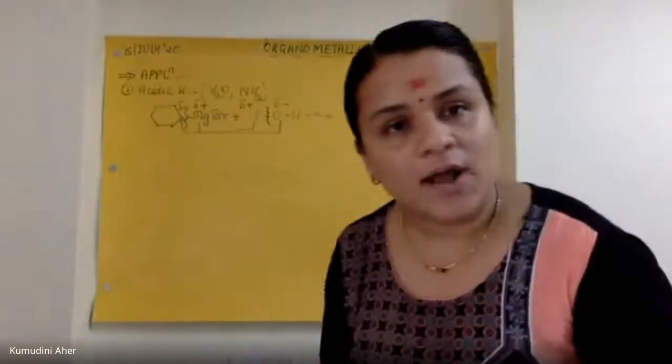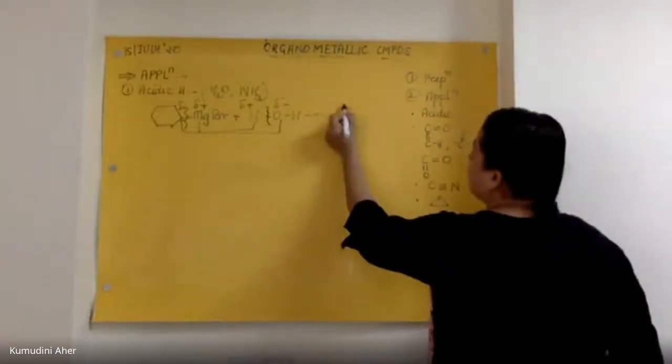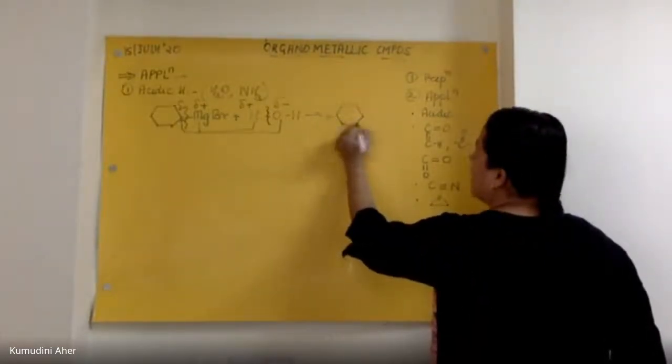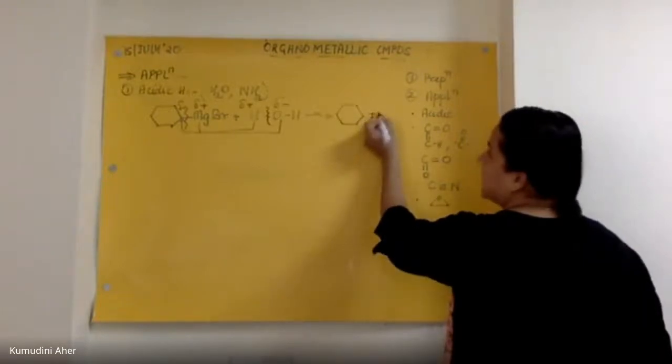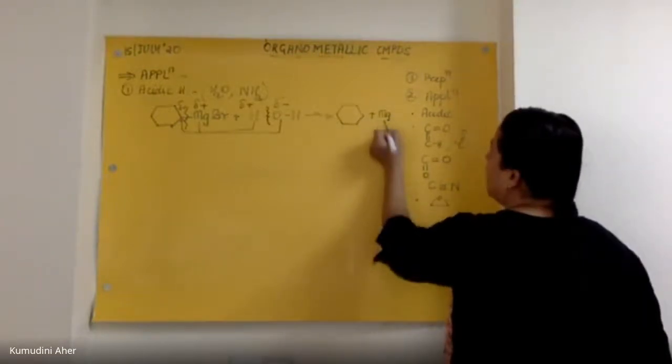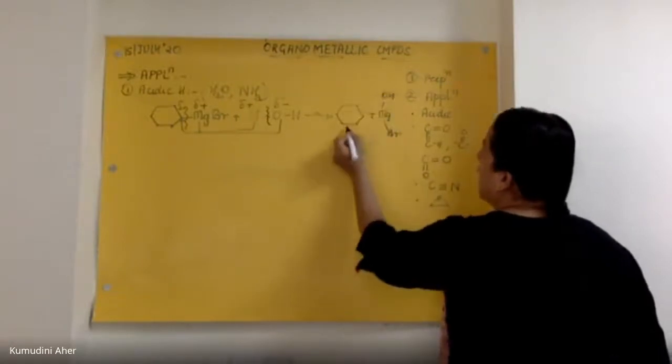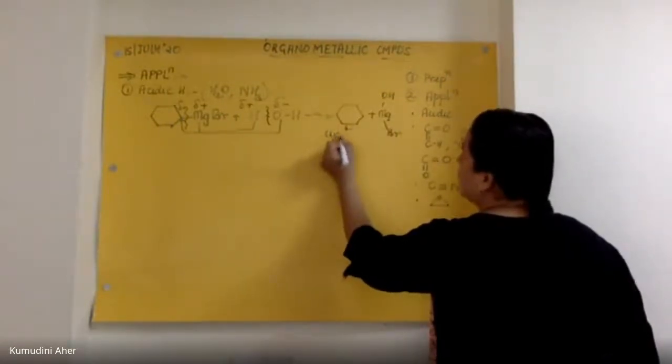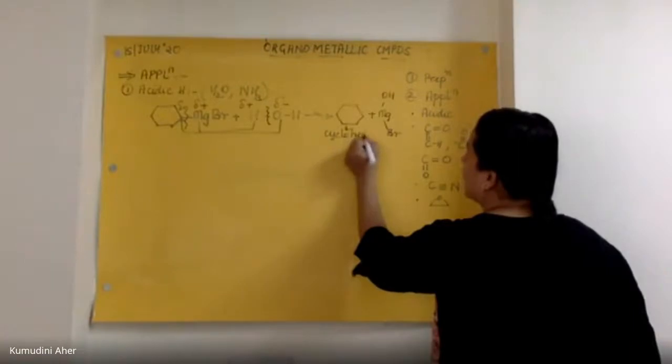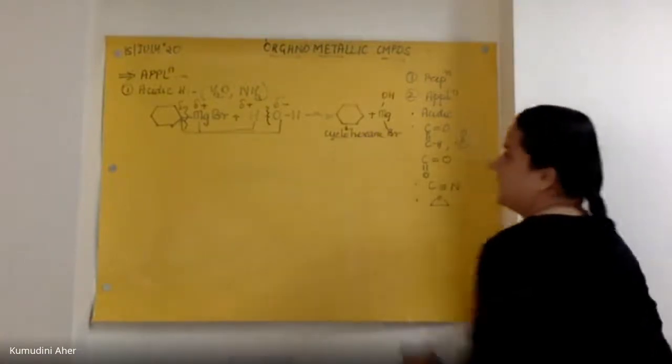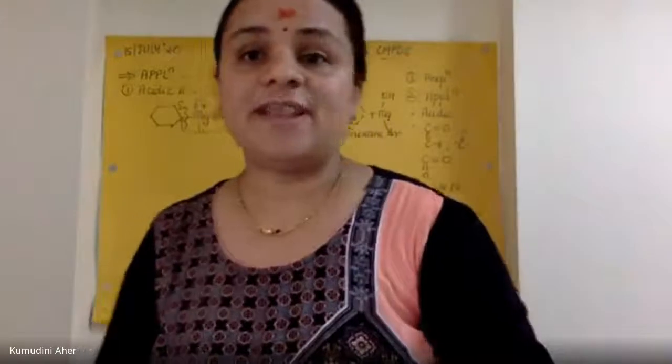So this will be your product. The product is this plus MgBrOH. And its name is cyclohexane. This was a reaction with acidic hydrogen in water molecule.